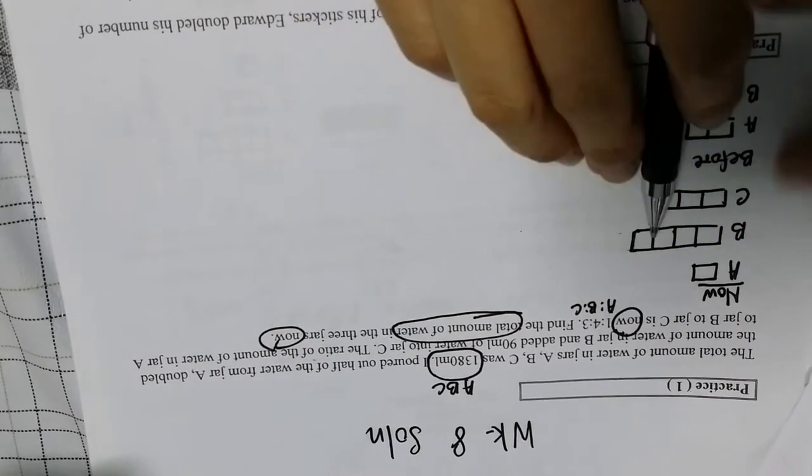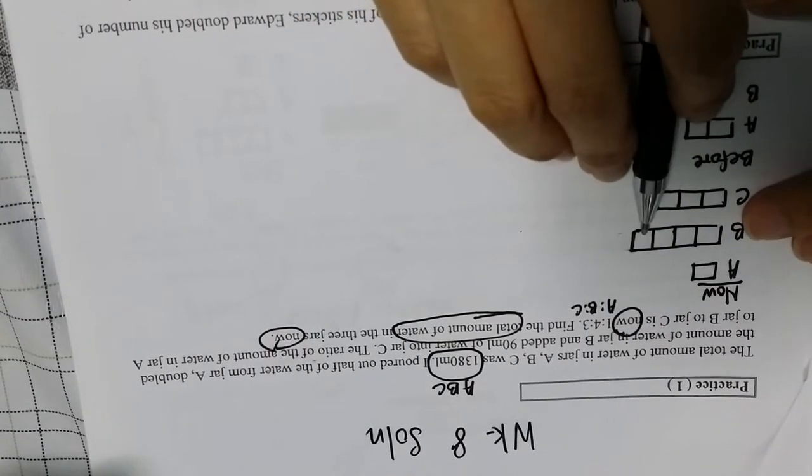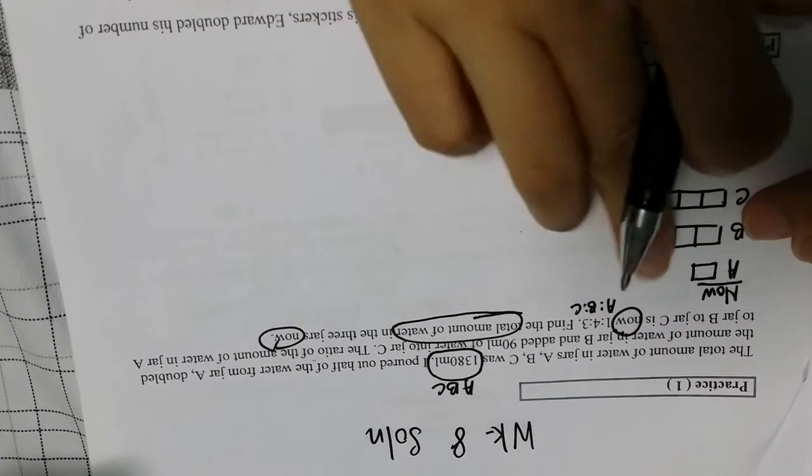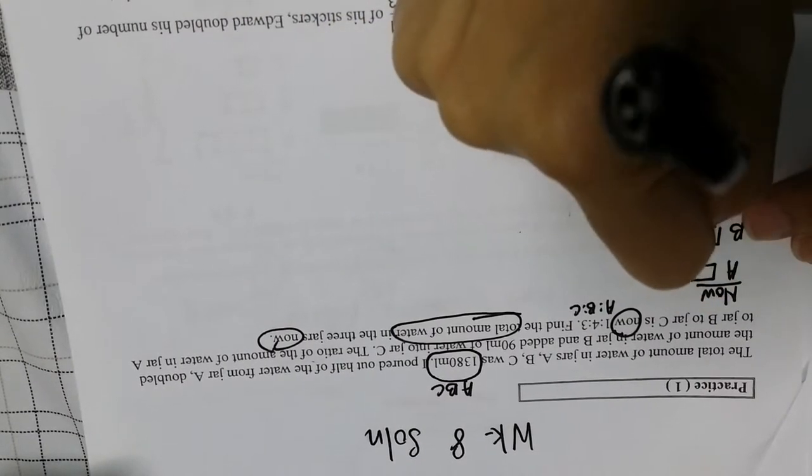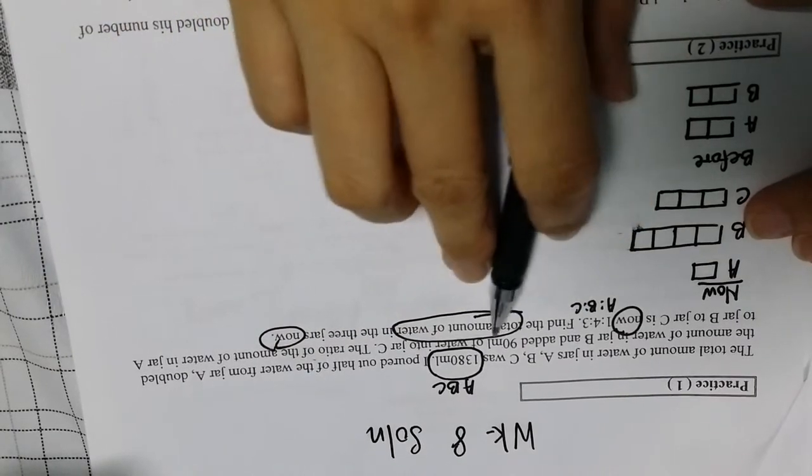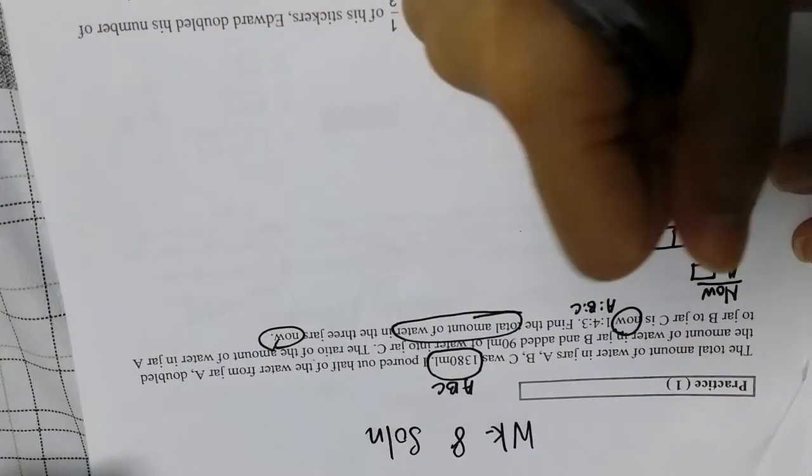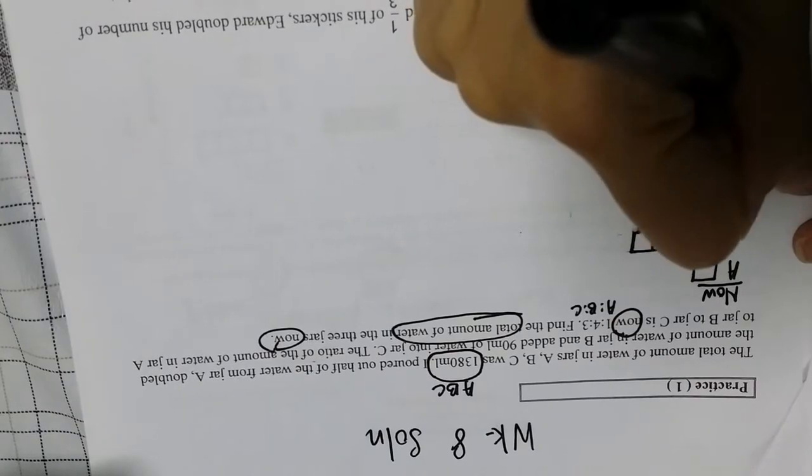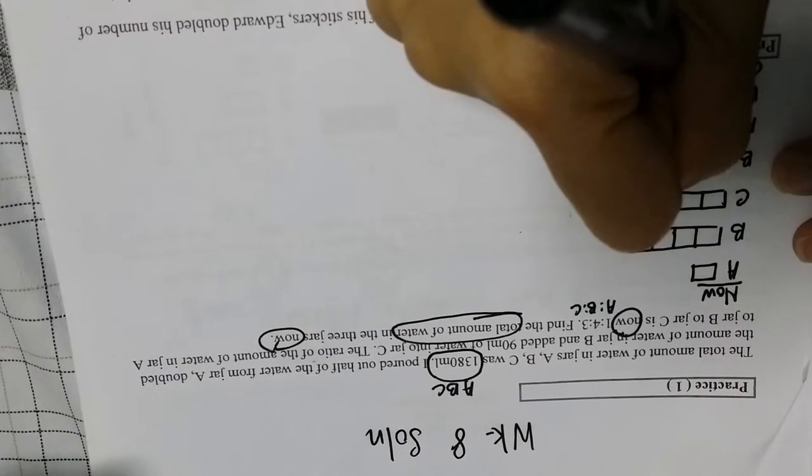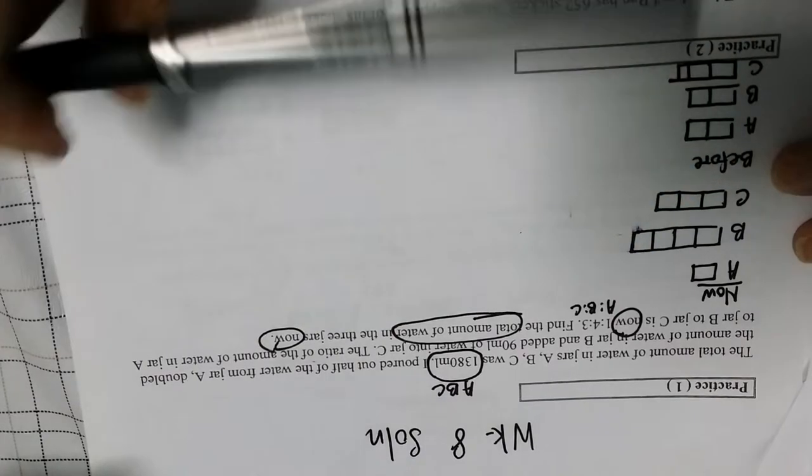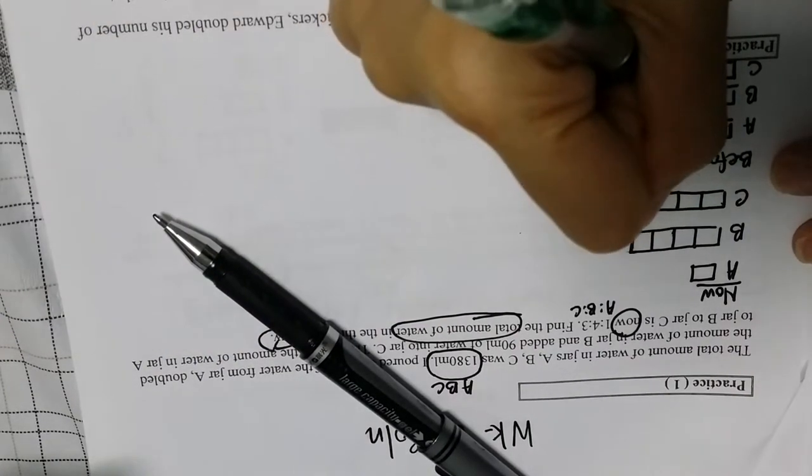And then B: double the water in B. After double it become this way, so the before should be this size like that. And add 90 ml water into C, so C add 90 ml. So C is something like this, so the 90 ml is somewhere here.